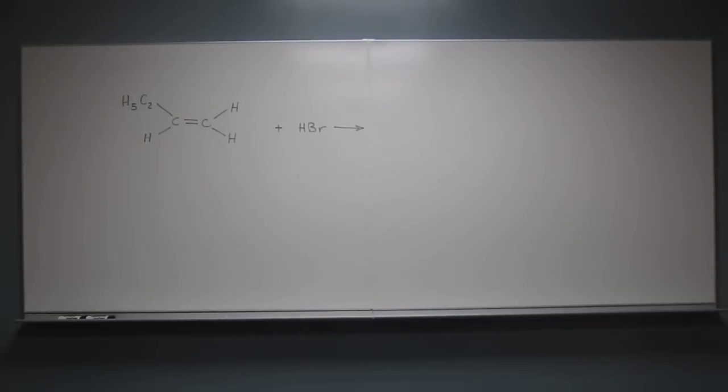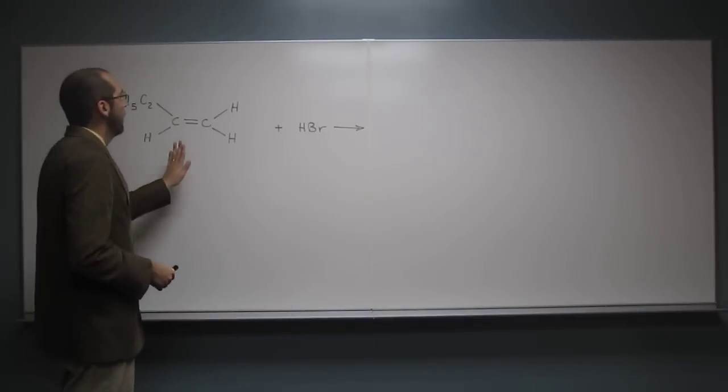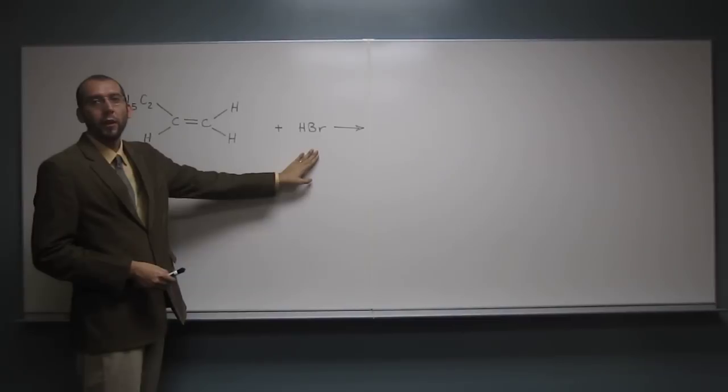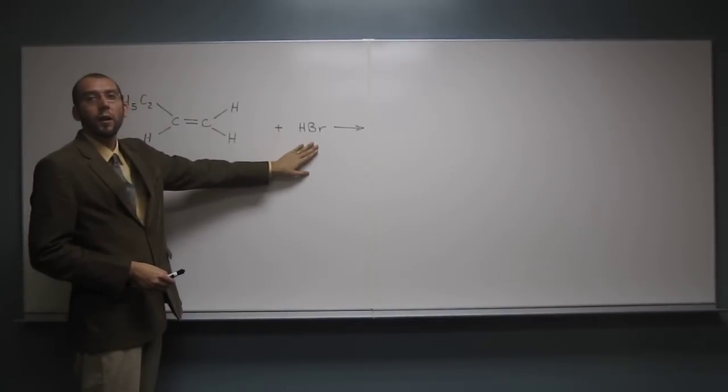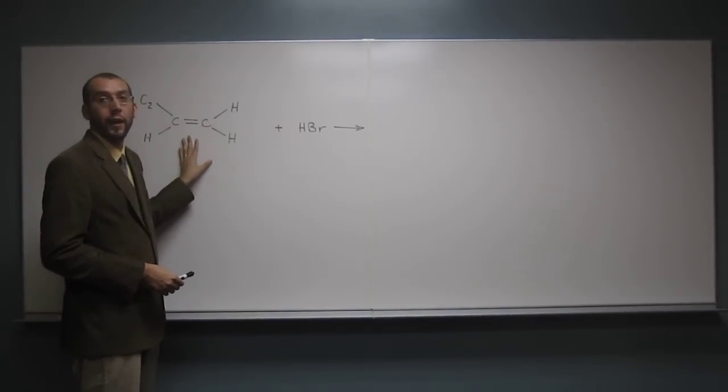Okay, so let's do another one of these. Predict the products of the following reaction. So we have an alkene here, and we have hydrobromic acid. So whenever you react an alkene with hydrobromic acid, the HBr is going to add to the alkene.